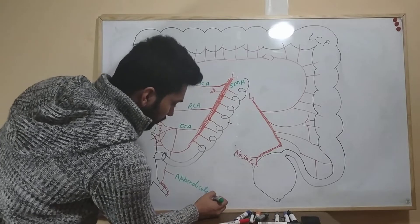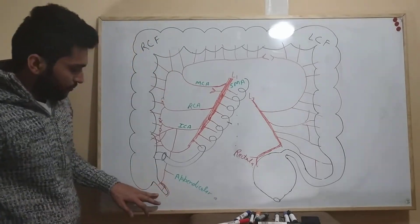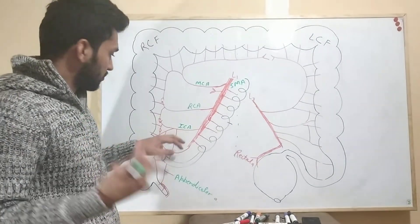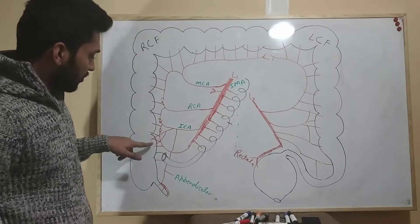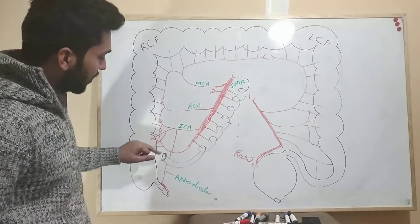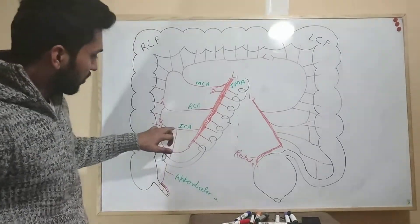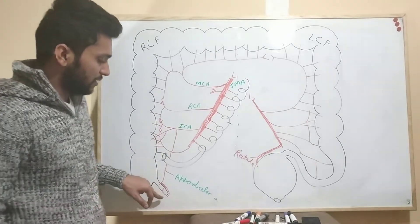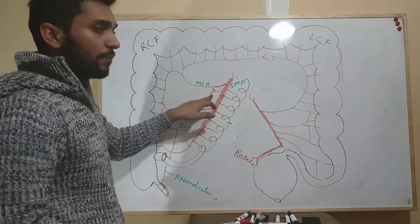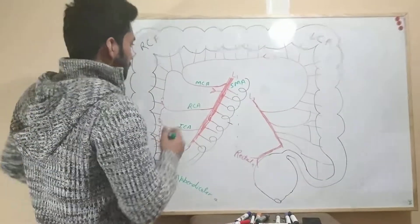So the ileocolic artery has three parts: one branch supplies the anterior part of the cecum, another supplies the posterior part of the cecum, and the appendicular artery supplies the appendix. The inferior pancreaticoduodenal artery supplies the pancreas and the duodenum on the anterior side.